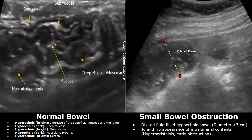In the image on the right we have another dilated fluid-filled hypoechoic bowel with a diameter greater than three centimeters. It had a to-and-fro appearance of intraluminal contents seen on real-time imaging, indicating hyperperistalsis — often seen in early obstruction.